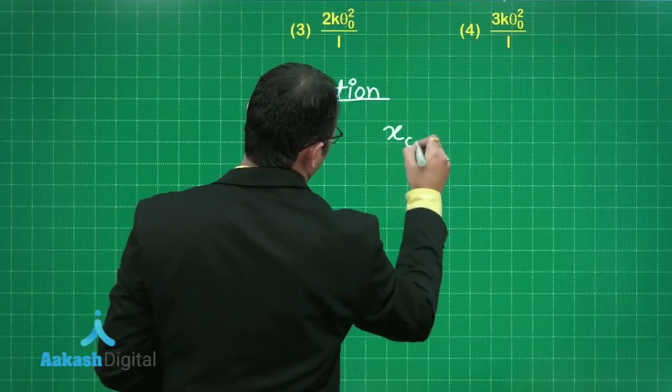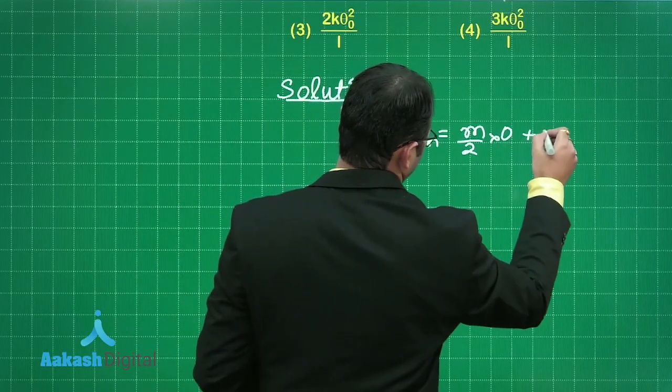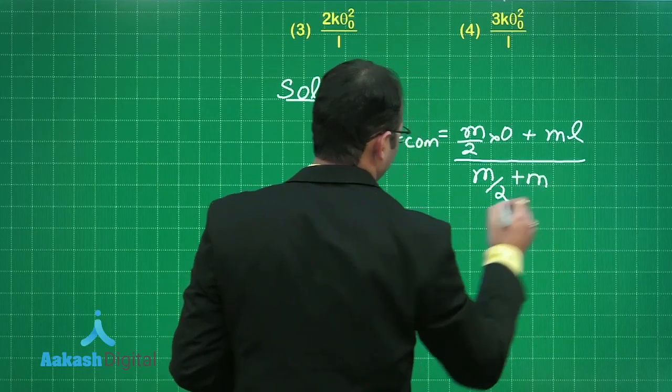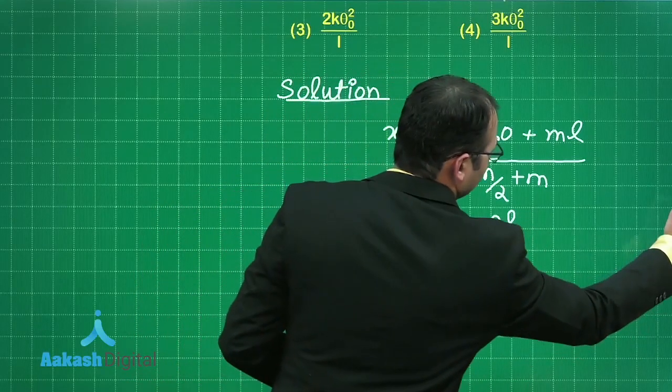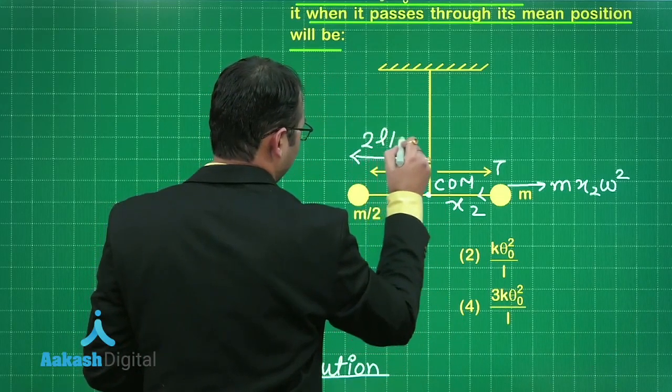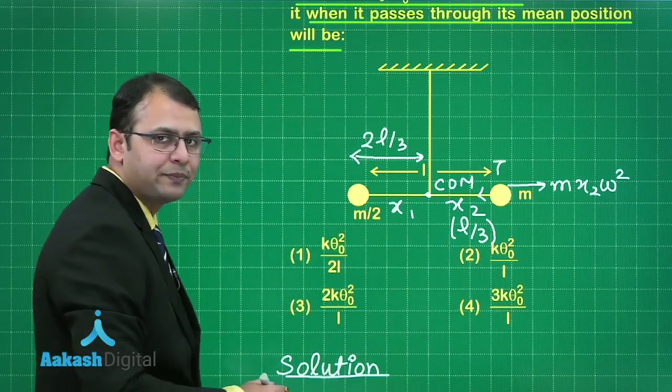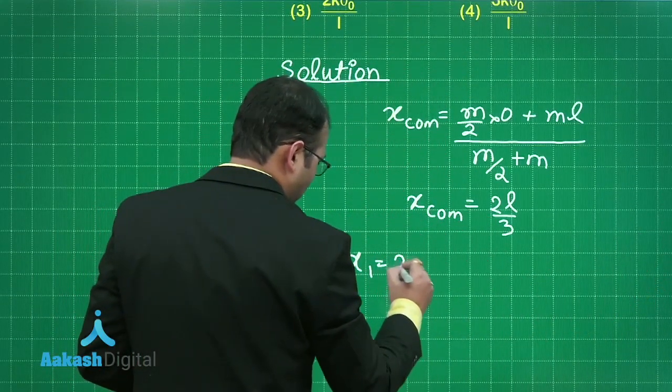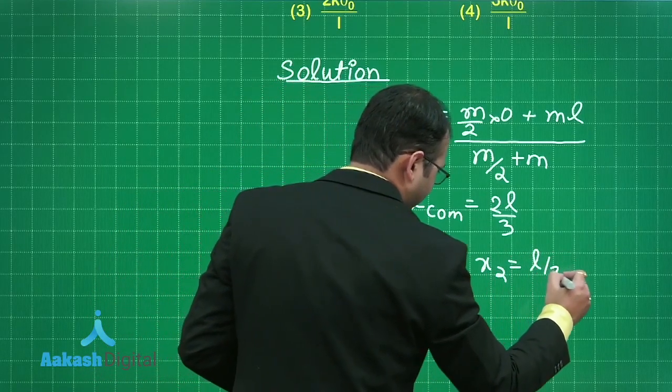So very first important is what is X2 and what is the value of omega? So let's start with the solution. First of all, the center of mass position can be M by 2 into 0 plus M into L by M by 2 plus M. Solving this, X center of mass would be equal to 2L by 3. So from here, the distance till center of mass would be 2L by 3. That is X1 is 2L by 3. That makes X2 as L by 3 only, right? Now we have the values of X1 and X2. Let's put it. X1 would be 2L by 3 and X2 would be L by 3.